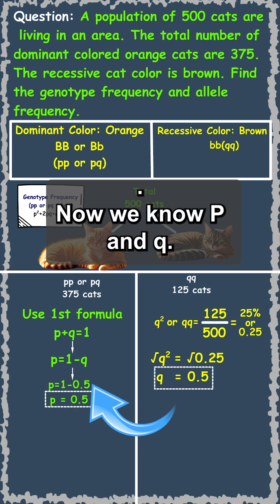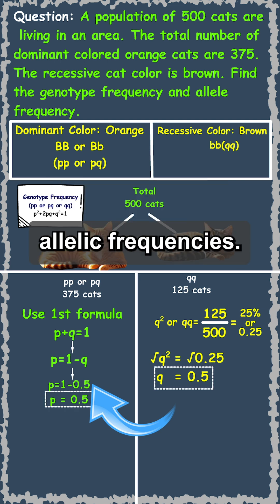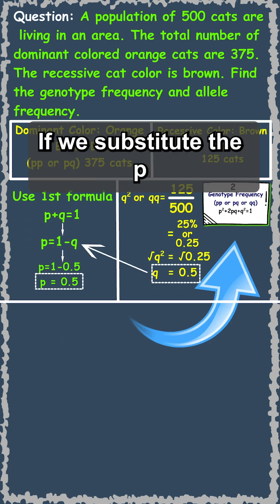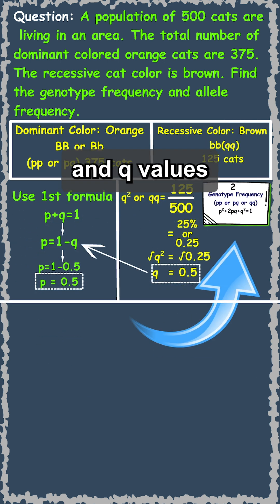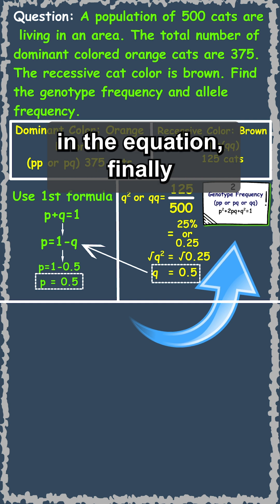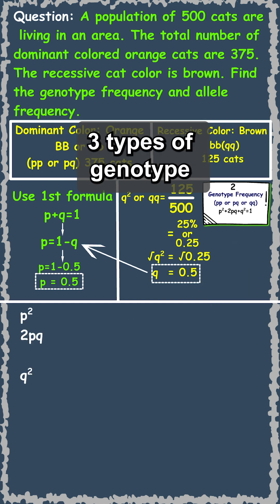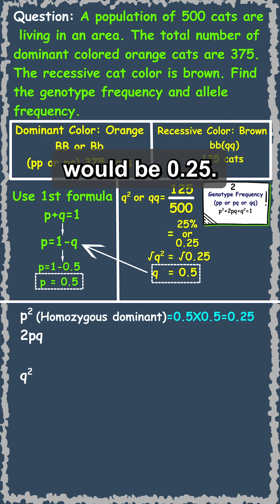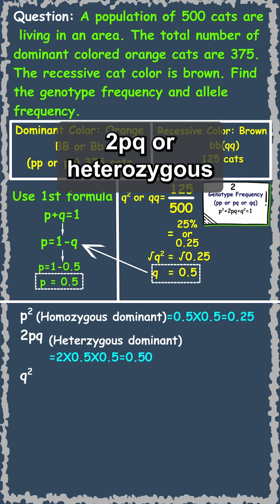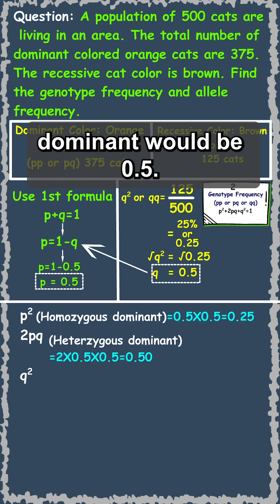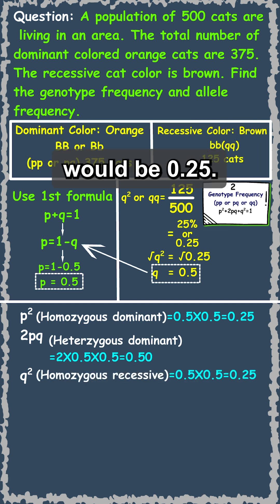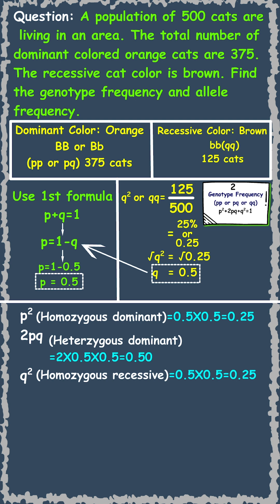Very easy, right? Now we know p and q. Let's find the allelic frequency — we have to again use the second formula for that. If we substitute the p and q values in the equation, we will get 3 types of genotype frequency: p² or homozygous dominant would be 0.25; 2pq or heterozygous dominant would be 0.5; and q² or homozygous recessive would be 0.25. Adding all up, we will get 1.